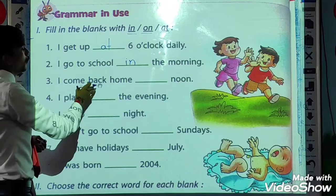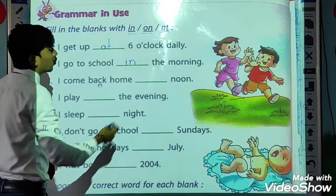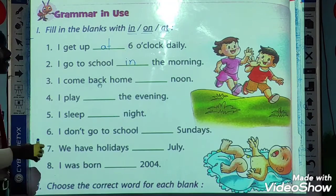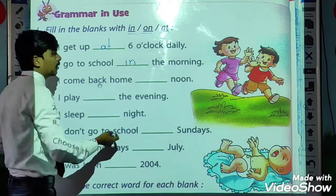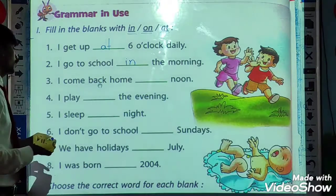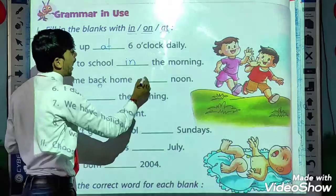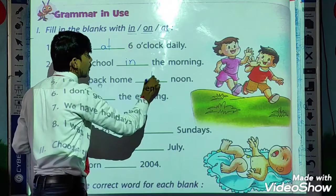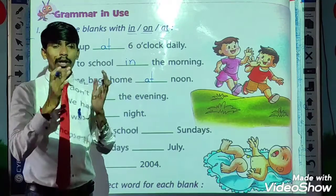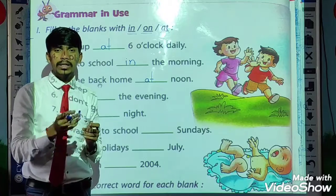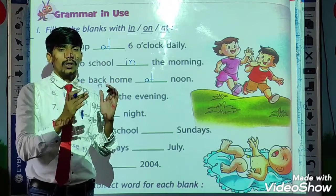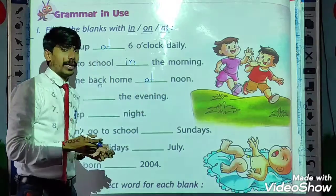Next: I come back home dash noon. Here also we are talking about time, so I come back home at noon. Noon means the time between twelve o'clock to one o'clock. So we use 'at' for that.